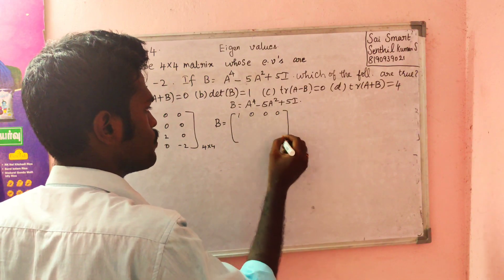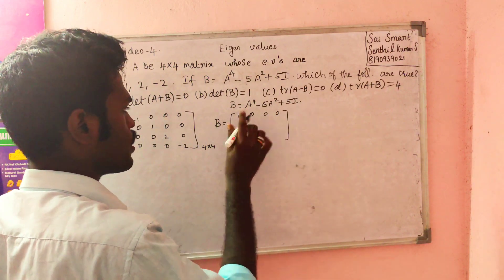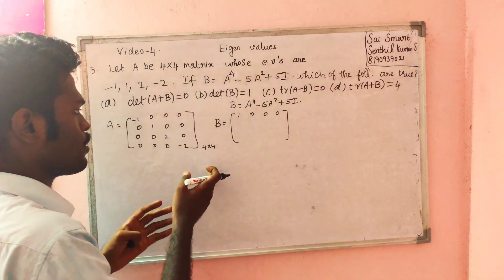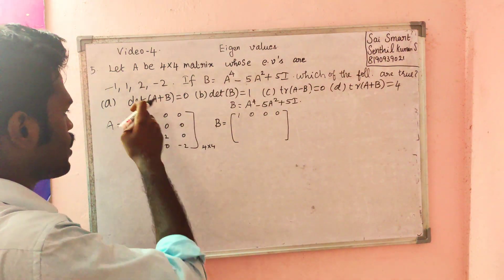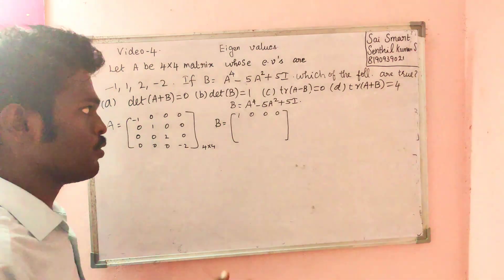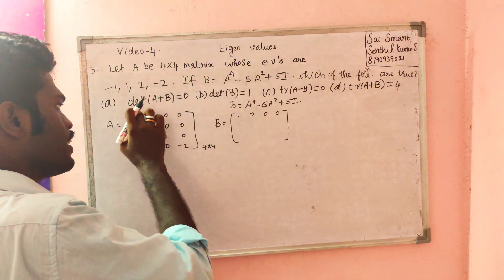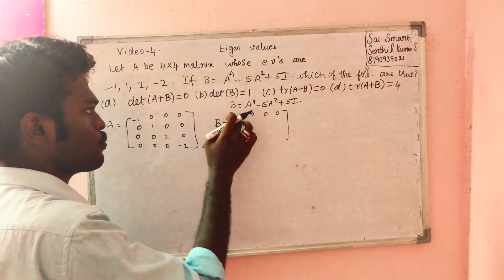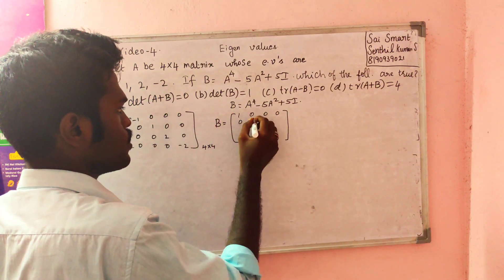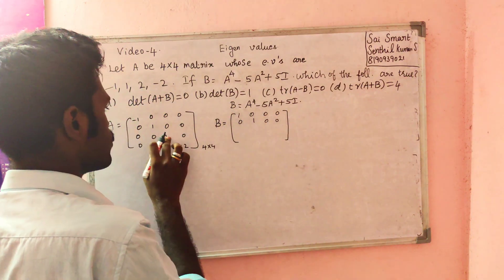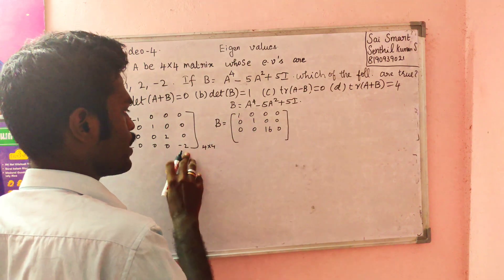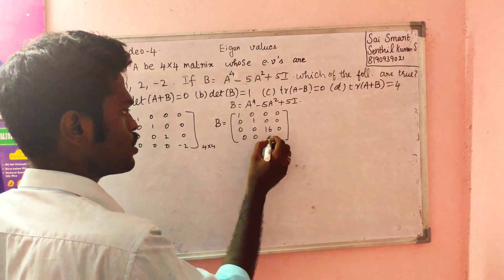The diagonal entries: eigenvalue to the power 4 gives 1, 0, 0, 0 / 0, 1, 0, 0 / 0, 0, 16, 0 / 0, 0, 0, 16. For eigenvalue squared: 1, 0, 0, 0 / 0, 1, 0, 0 / 0, 0, 4, 0 / 0, 0, 0, 4. Eigenvalue 2 to power 4 is 16; 2 squared is 4.